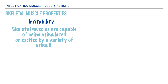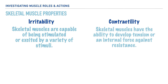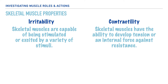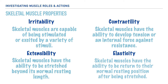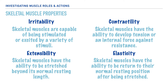Next, muscles display contractility, essentially meaning that they have the ability to develop tension or an internal force against resistance. Following this is extensibility, and it's through this term that we better understand that muscles have the ability to be stretched beyond their normal resting length. And finally, skeletal muscles have elasticity, meaning that they have an ability to return to their original or normal resting position after having been stretched.